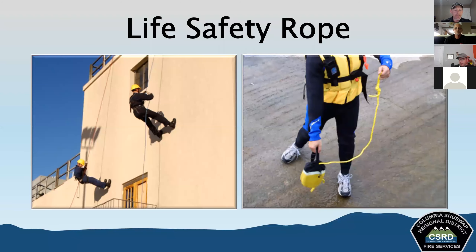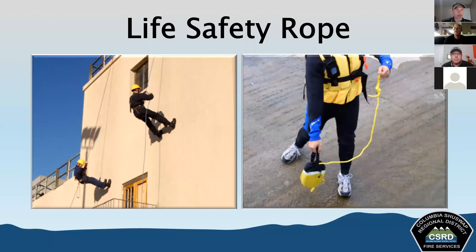NFPA 1983 regulates life safety rope. It states that only one-block construction using a continuous filament virgin fiber for load-bearing elements is suitable. They require manufacturers to provide information on proper use, inspection, and maintenance procedures, as well as criteria for retiring rope from service. Criteria for reuse include: no abrasions or visible damage, not exposed to heat or direct flame, not subjected to any impact load, not exposed to chemicals or materials that might deteriorate the rope, and having passed an inspection by qualified personnel.